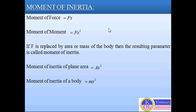Now, if this moment Fx is further multiplied by the distance X, then it will be the moment of moment, or the second moment of force. So the second moment of force will be Fx into X, which gives Fx square.